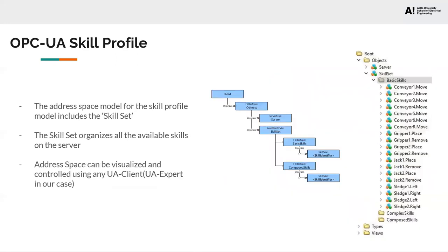The next part of the project was the OPC UA skill profile. The proposed address space for the skill profile can be seen on the screen. The skill profile consists of a skill set which is of base object type of the OPC UA specification and composes the various skills available in the program. Skills can be of two types: basic skills or composed skills. Basic skills control basic hardware components such as conveyors or jacks, whereas composed skills use these basic skills. On the right of the screen, we can see the address space being visualized by the UaExpert client — the address space can be visualized on any OPC UA client.